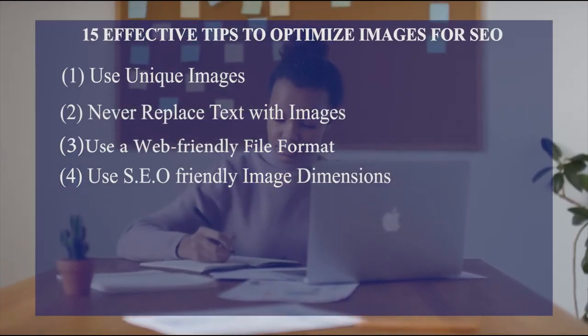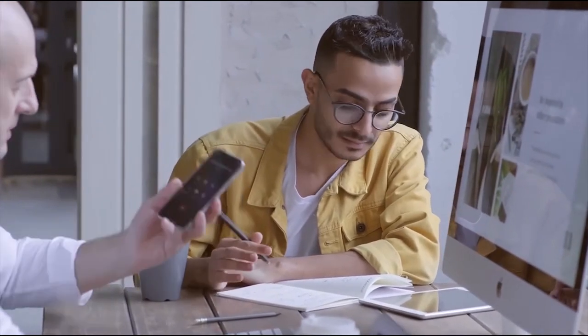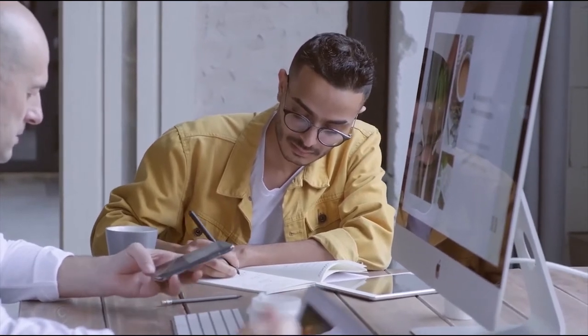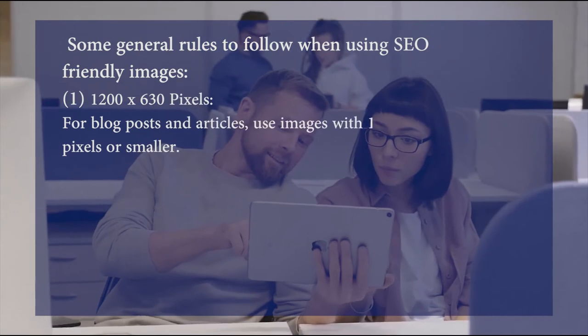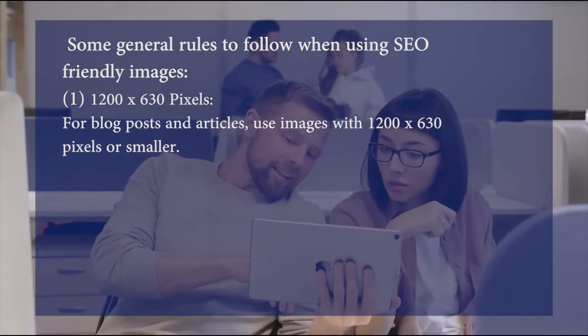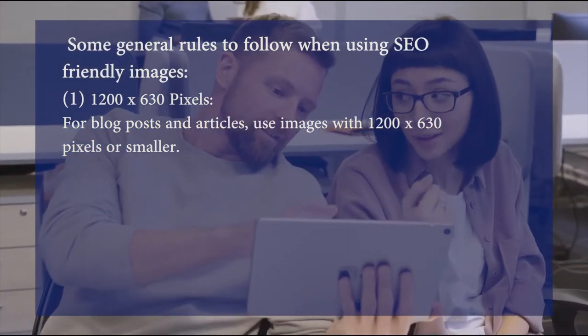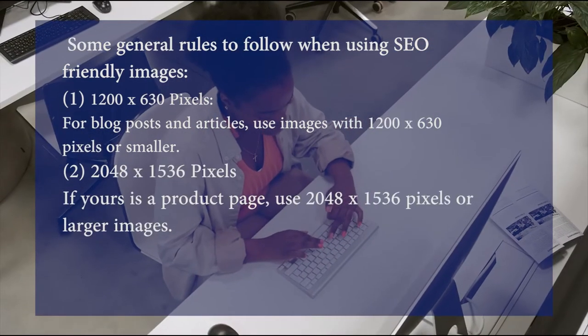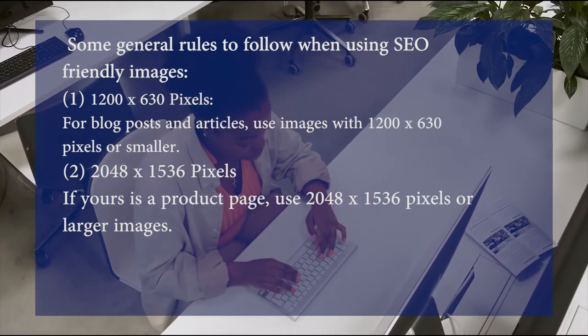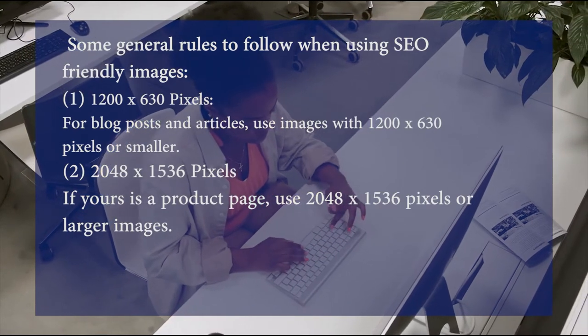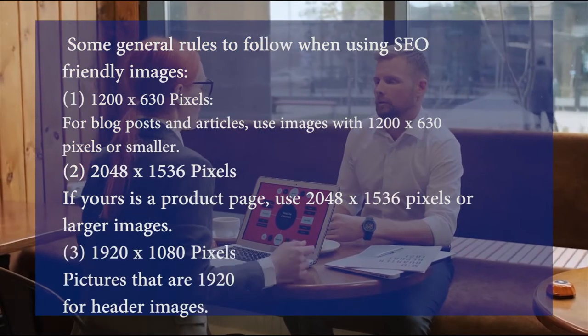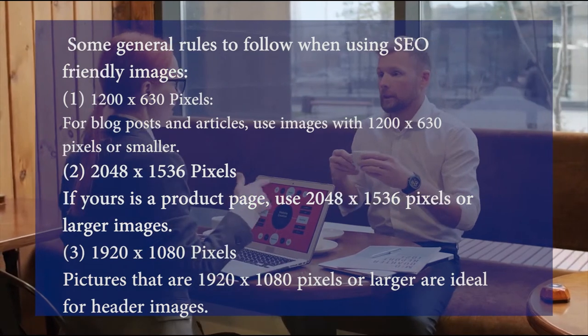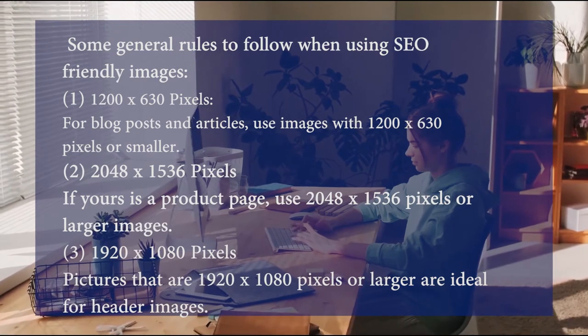Tip four: use SEO-friendly image dimensions. Image dimensions are crucial factors to consider when uploading images to your blog, as they affect how images are displayed and how search engines index them. General rules: use 1200 by 630 pixels or smaller for blog posts and articles; use 2048 by 1536 pixels or larger for product pages; and 1920 by 1080 pixels or larger for header images.